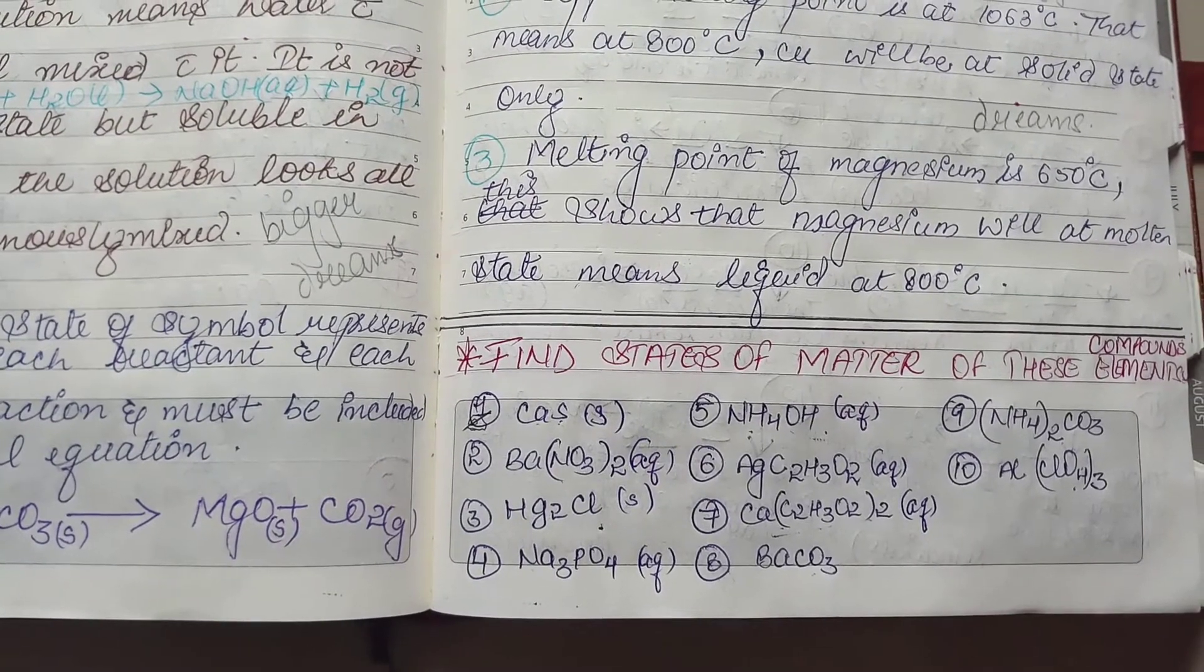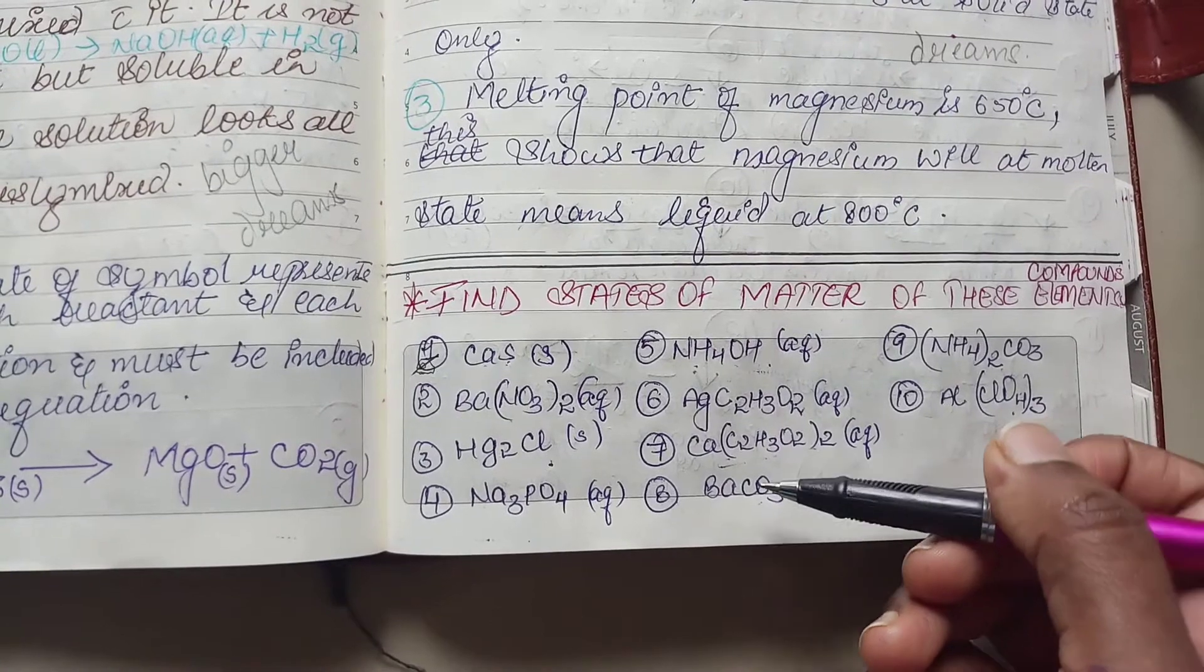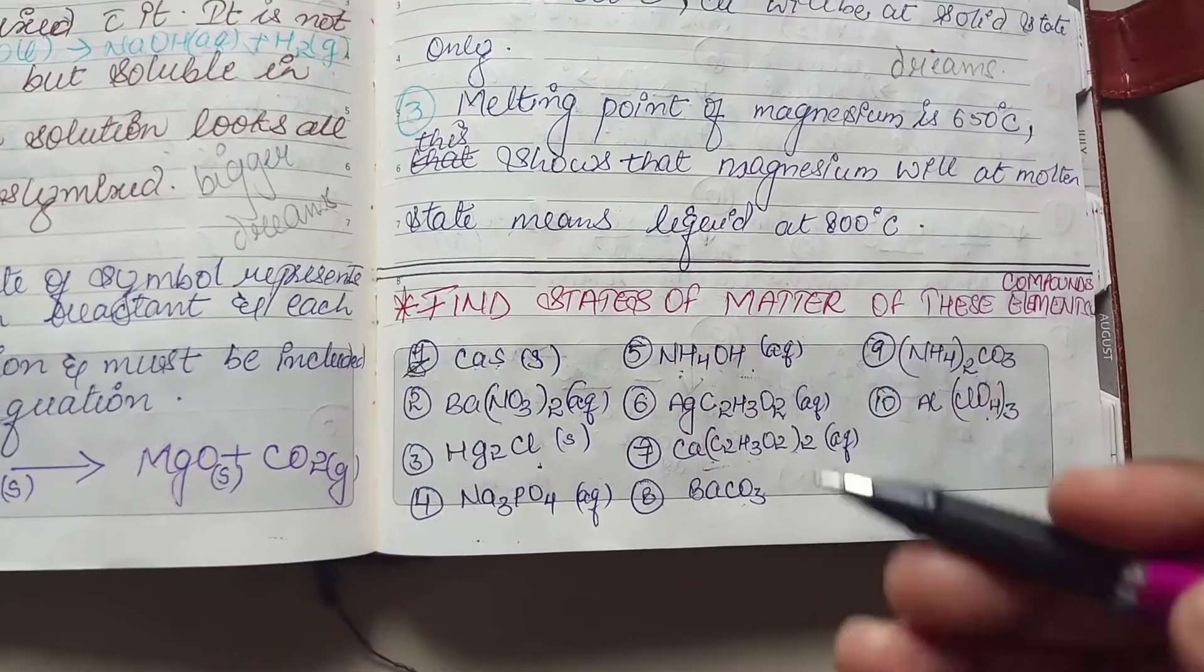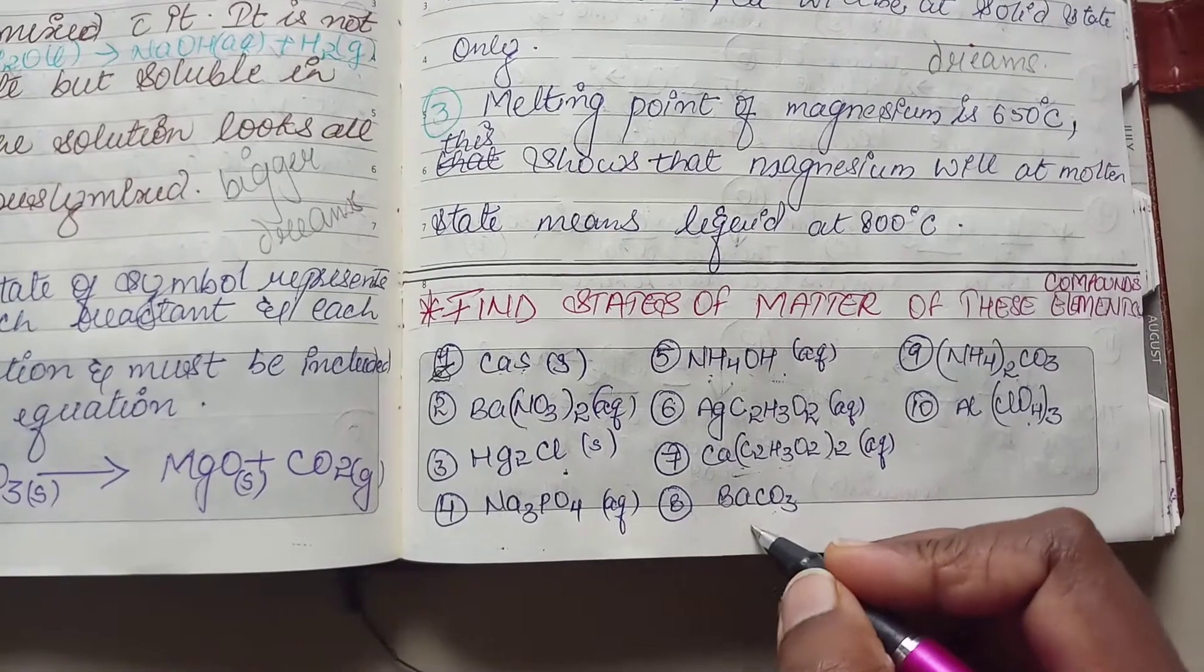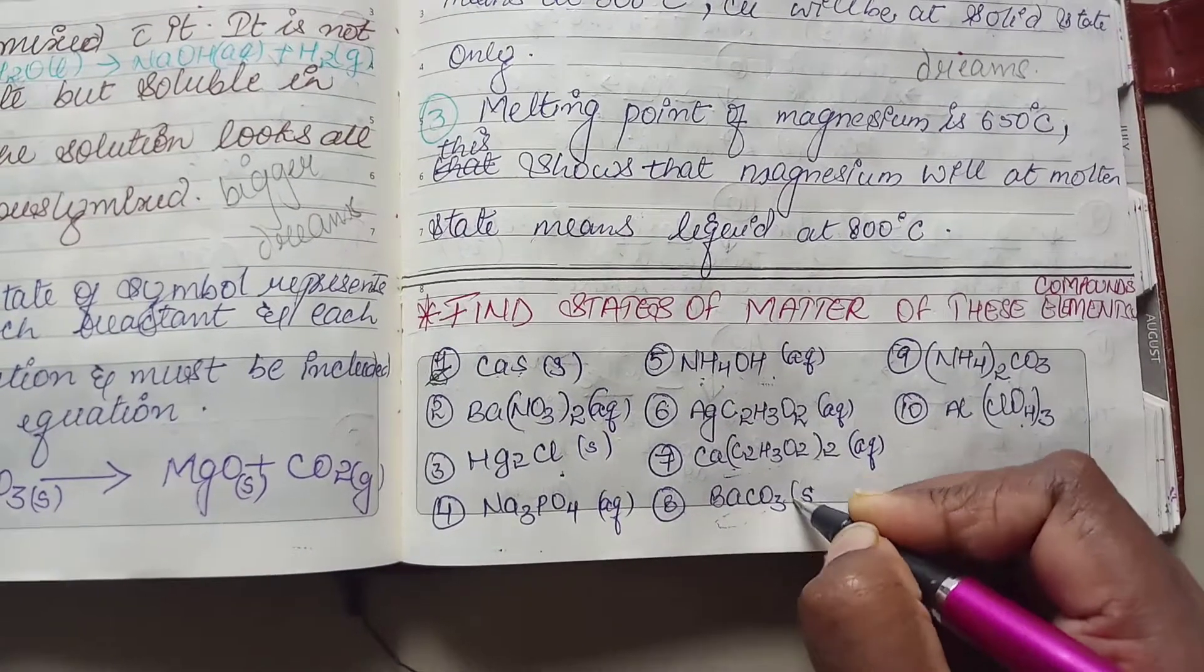Now, we have carbonate. Carbonate is insoluble in nature, solid. But, there is only group 1 elements who are making carbonate soluble in water. Because of that reason, barium is not there in group 1 elements. This compound is going to remain solid.